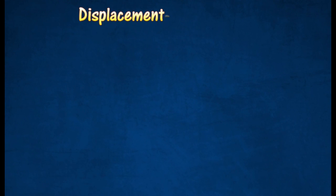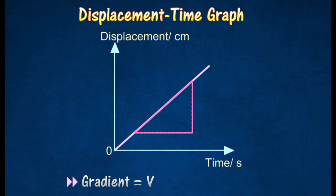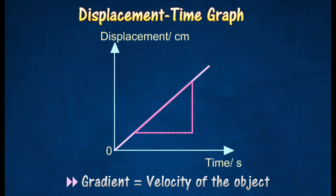A displacement-time graph is constructed by having the displacement as the vertical axis and the time as the horizontal axis. It shows how the displacement of an object changes with time. The gradient of a displacement-time graph represents the velocity of the object.